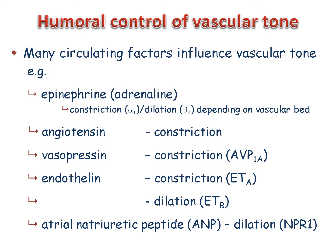Atrial natriuretic peptide is synthesized and released from muscle cells in the atria of the heart in response to stretching of the atria. It acts on the ANP receptor called NPR-1, which is a membrane-bound guanylate cyclase. Activation of the cyclase stimulates the production of cyclic GMP, a second messenger that promotes vasodilation.